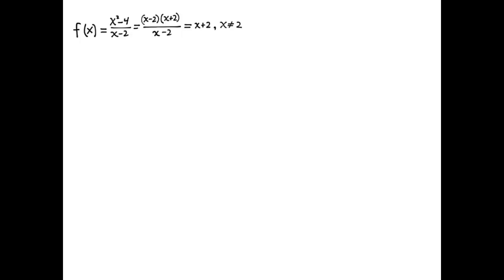So the function x squared minus 4 over x minus 2 and the function x plus 2 are the same everywhere except at this one place, x equals 2.